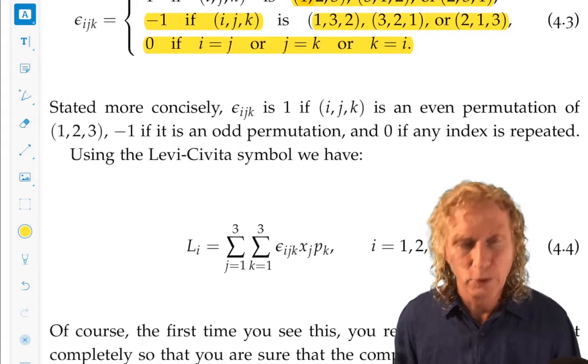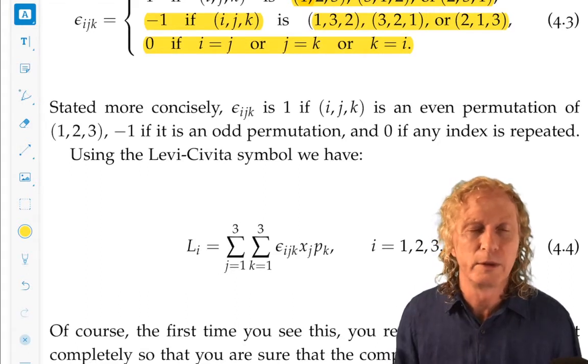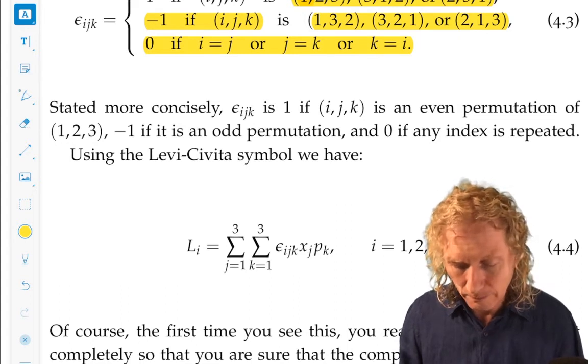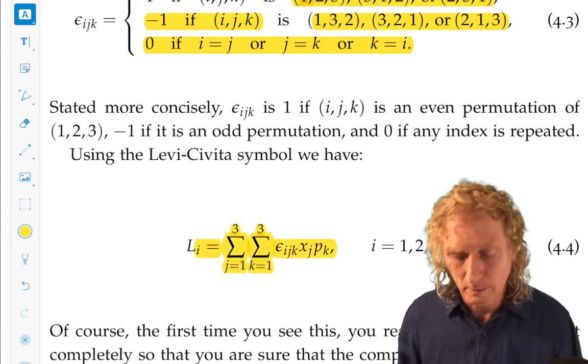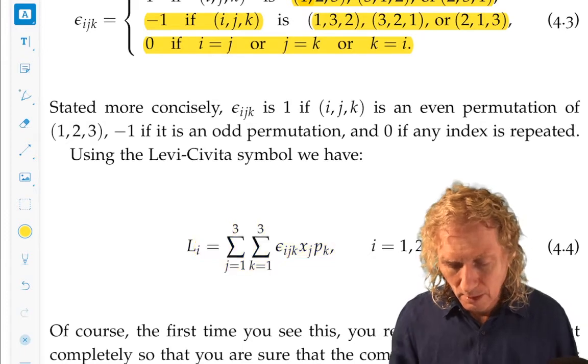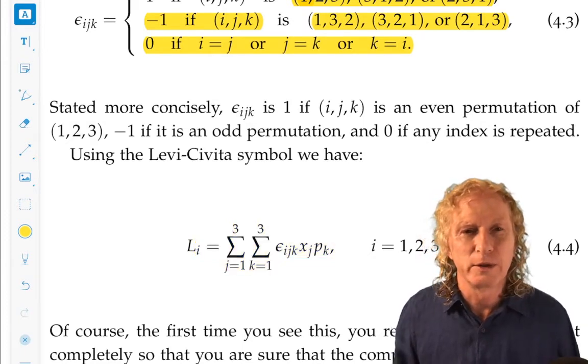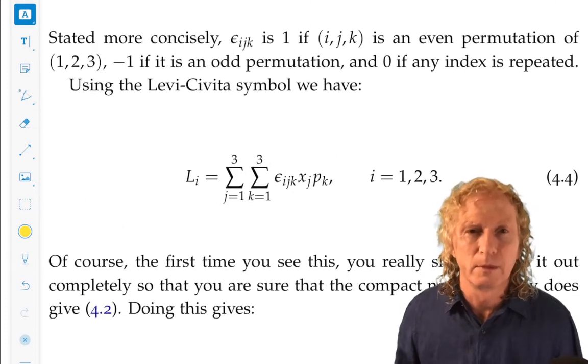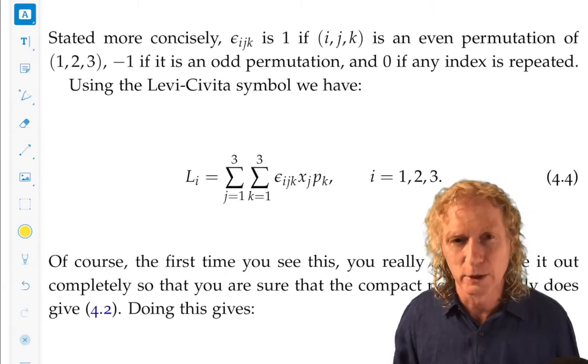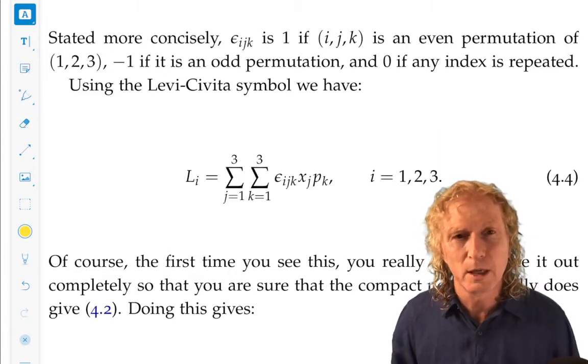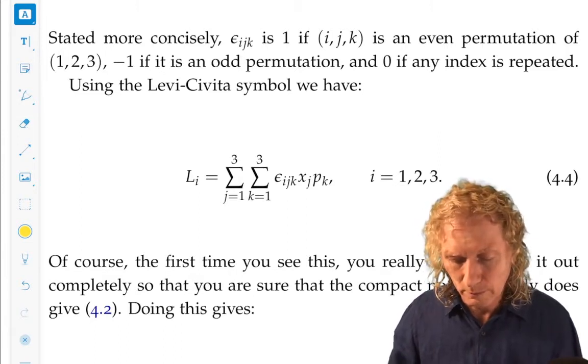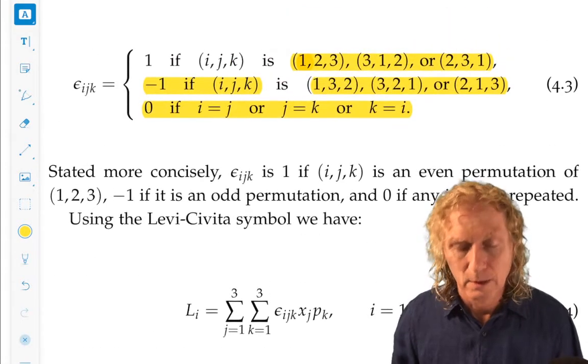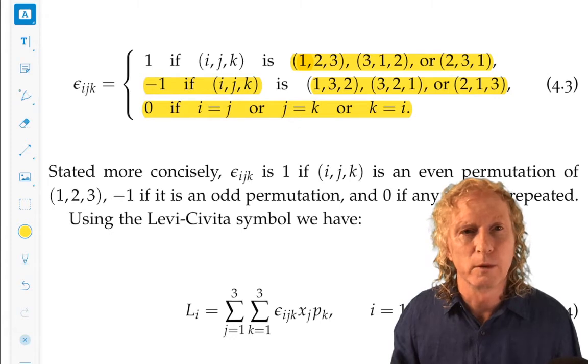Now, using this notation, we can rewrite the three components of angular momentum in this form. Well, how do you know that this notation really encodes angular momentum? So, the first time I learned this, and I encourage you to, write out completely the components for L1, L2, and L3 using this definition for epsilon i, j, k.